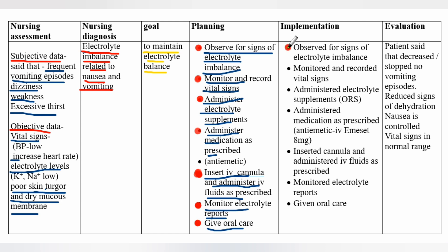Implementation: observed for signs of electrolyte imbalance, monitored and recorded vital signs, administered electrolyte supplements (ORS), administered medication as prescribed — IV ondansetron 8 mg — inserted IV cannula and administered IV fluids as prescribed, monitored electrolyte reports, and given oral care.